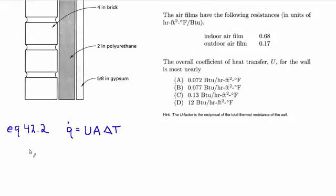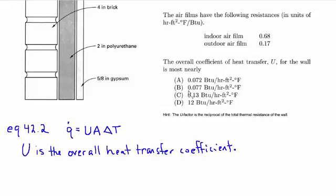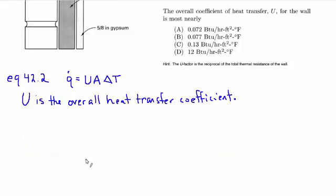And again, by definition U is the overall heat transfer coefficient. I know it says that up here, but I just think it's worth a reminder. So for a well-insulated building, we would expect the U-factor to be very small because minimal heat transfer should be transmitted across the walls.